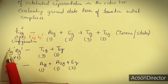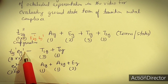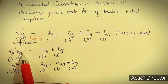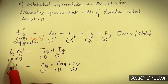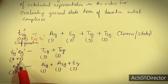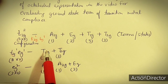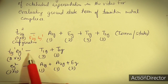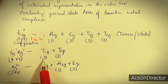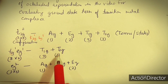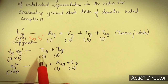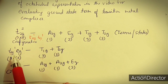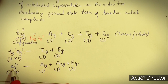The first excited state configuration T2G¹EG¹ has total degeneracy six. Its product gives T1G plus T2G, each with degeneracy three, totaling six microstates with one multiplicity and nine with three multiplicity. For T2G², since it has triple degeneracy like P orbitals, it behaves like P² configuration — the maximum electrons is 6, giving 15 total microstates using the standard formula.